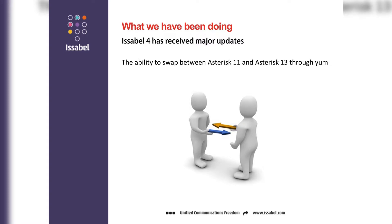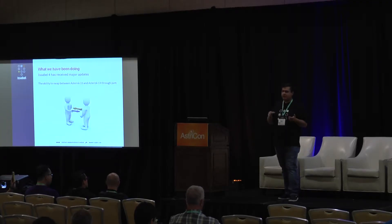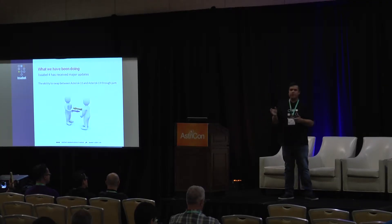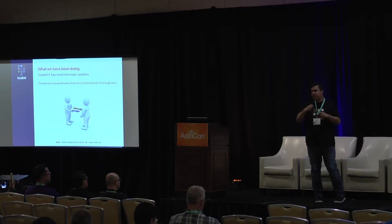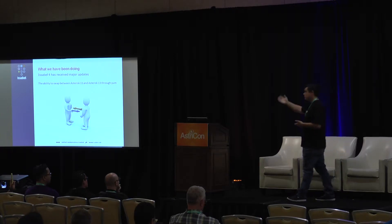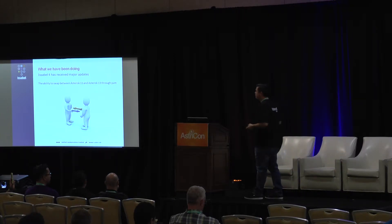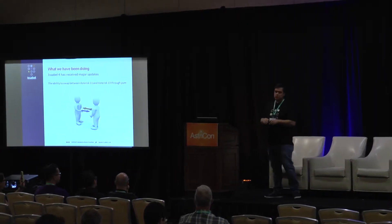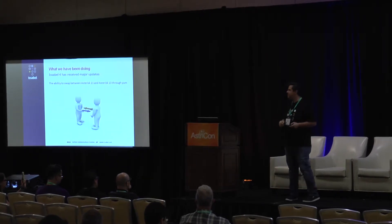We put together a new way of installing Asterisk and the dependencies on all the other components in the system. If you have an Asterisk 11 server running today and you want to swap to Asterisk 13 for any reason, you can do it through YUM — just remove the old Asterisk, YUM install Asterisk 13, and it will be running without any problems or issues. We tested it and it's pretty good.